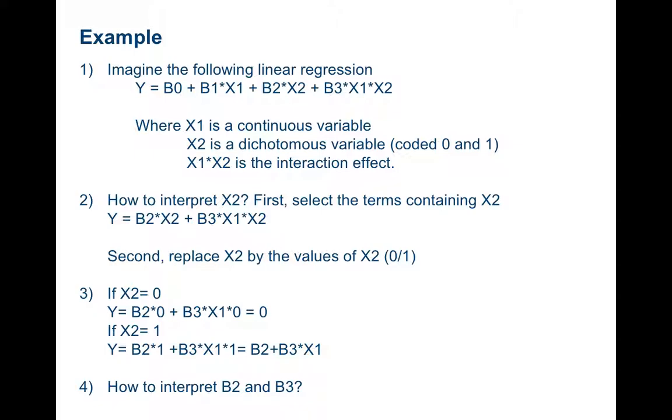How to interpret X2, the variable X2? In this case, we can select the terms in the equation where X2 is and replace X2 by its dichotomous values 0 or 1. When the value of X2 is 0, the result of the equation here will be 0. When X2 is coded 1, the result of the equation will be beta 2 plus beta 3 multiplied by X1.